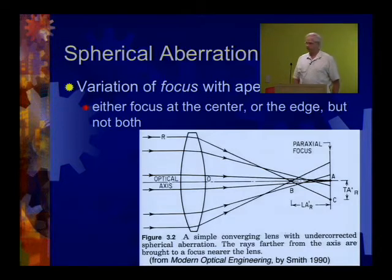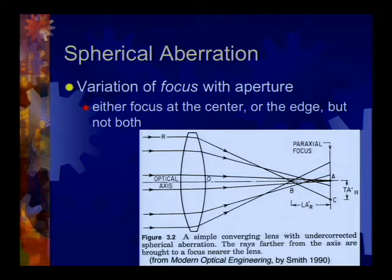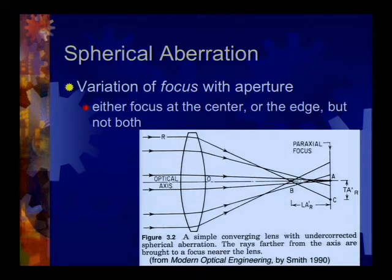Spherical aberration is how focus varies as light crosses the aperture from center to edge. Rays in the center converge at one point while rays from the edges converge at another — you can't get both in focus simultaneously. This is typically corrected well across most of the lens, maybe getting blurry at the very edge, which matters less since most content is towards the center.